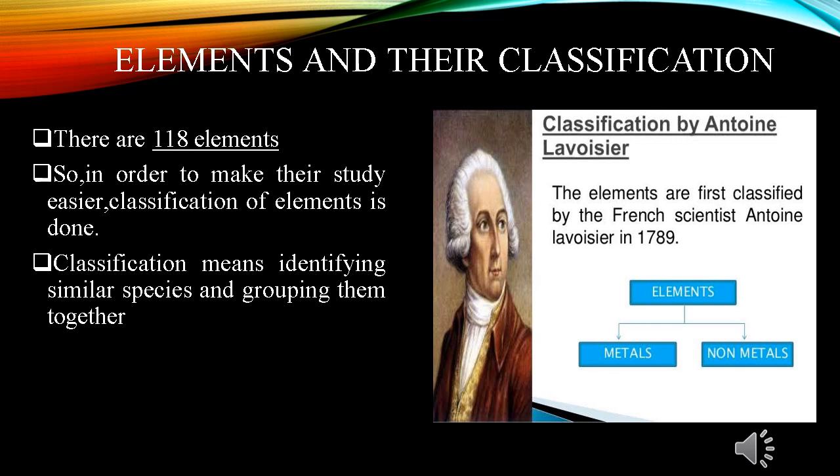As we all know that there are 118 elements known to us. All these elements have different properties. In order to make their study easier, classification of elements is done. Classification means identifying similar species and grouping them together. Many scientists and chemists tried to attempt to classify the elements in a logical way. The first and most apparent one was to classify all elements into metals and non-metals. This attempt was first done by the French scientist Antoine Lavoisier in 1789. At his time, only 30 elements were known. He is also known as father of modern chemistry.